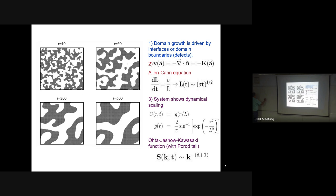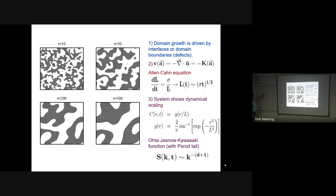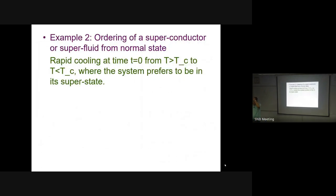This is also why noise is asymptotically irrelevant - noise just changes the thickness of the interface. It takes longer to get to the regime where the interface width is irrelevant, but these are good physics concepts to have. The next set of statements concerns a system I want to discuss in greater detail because it's an area where I have contributed: the ordering of a superconductor or superfluid from the normal state.